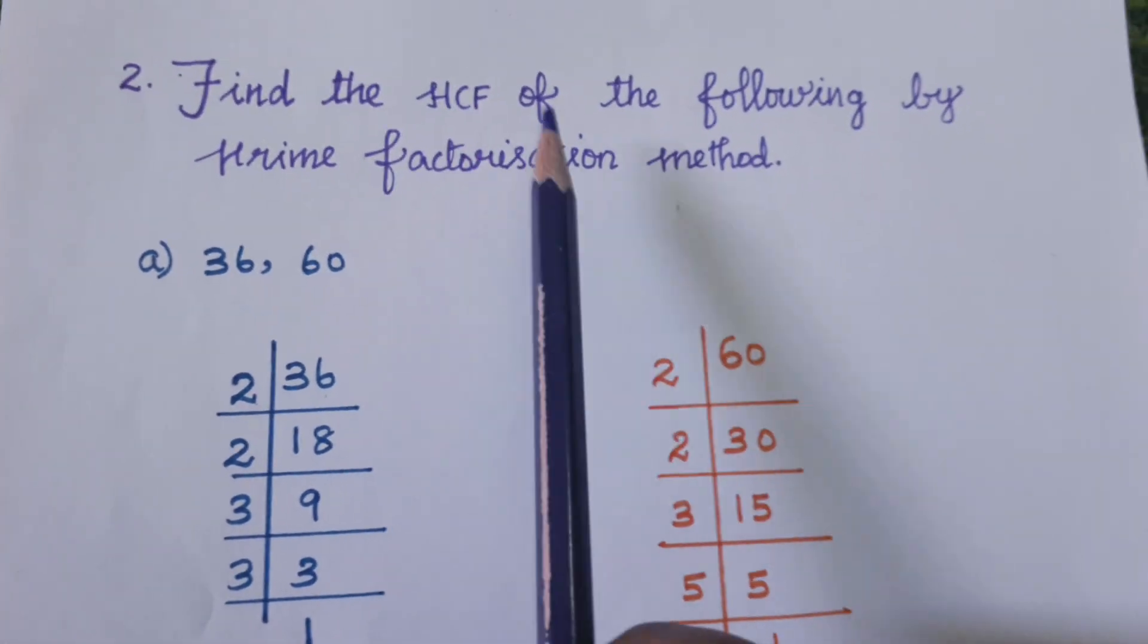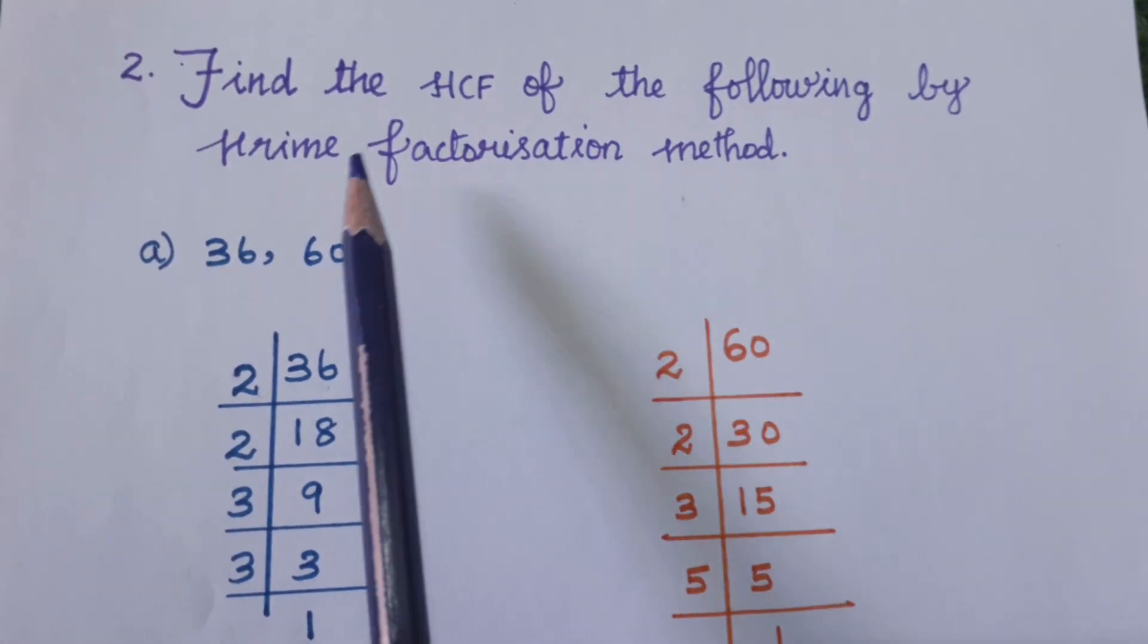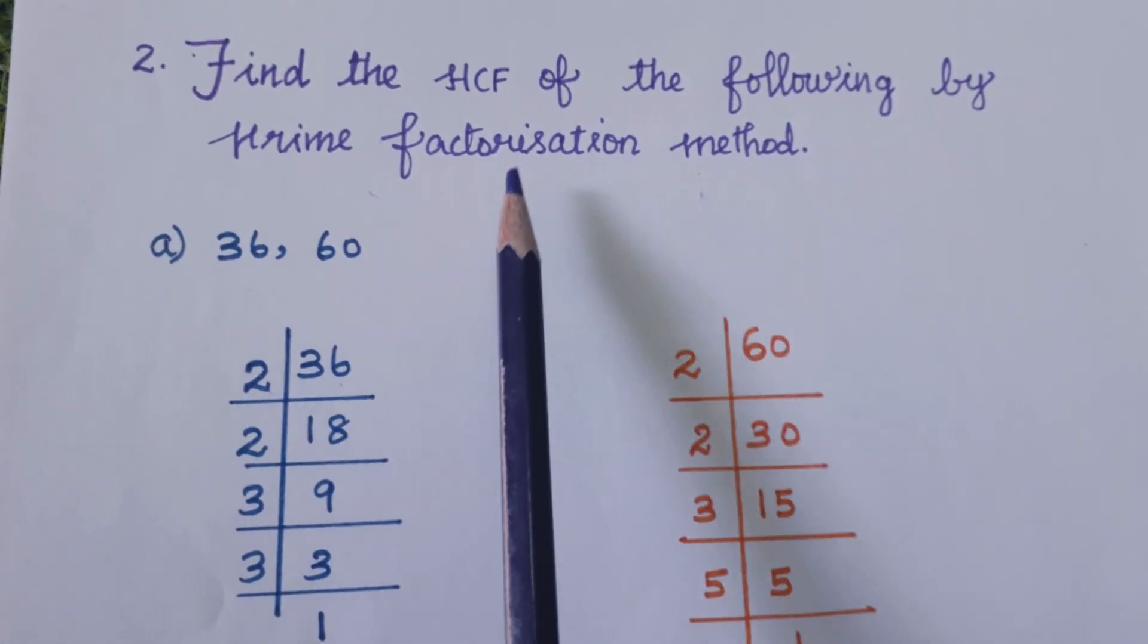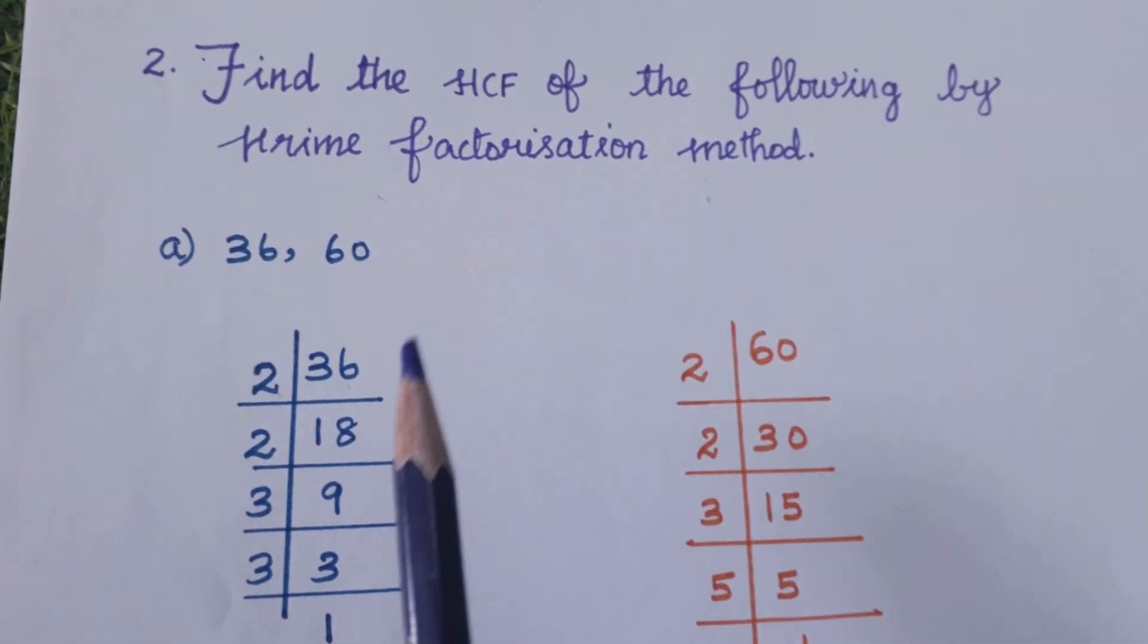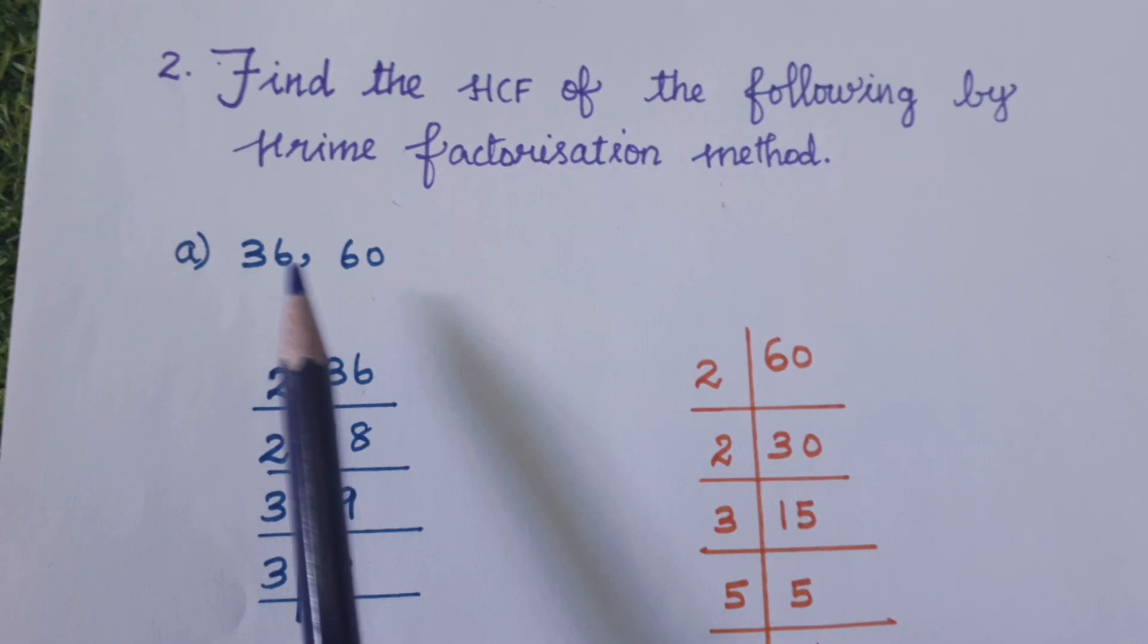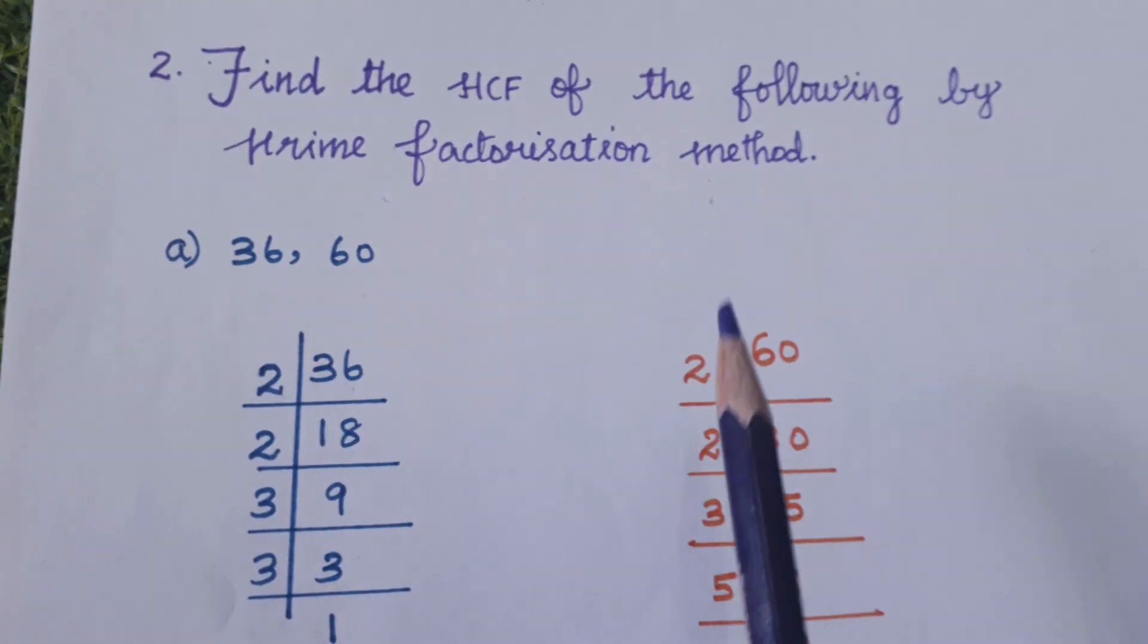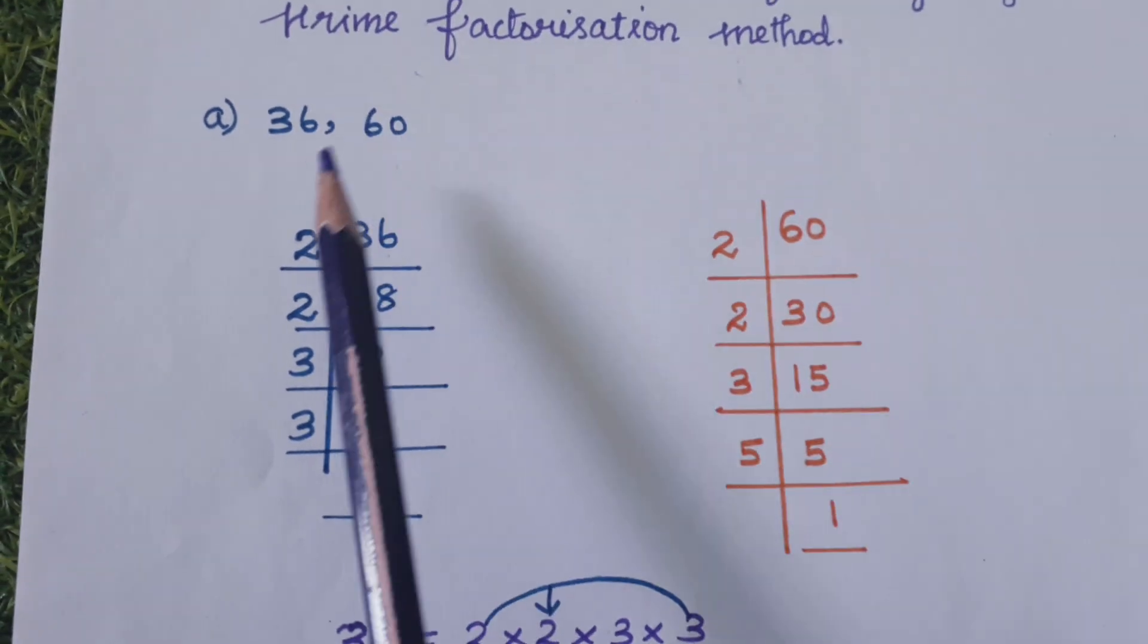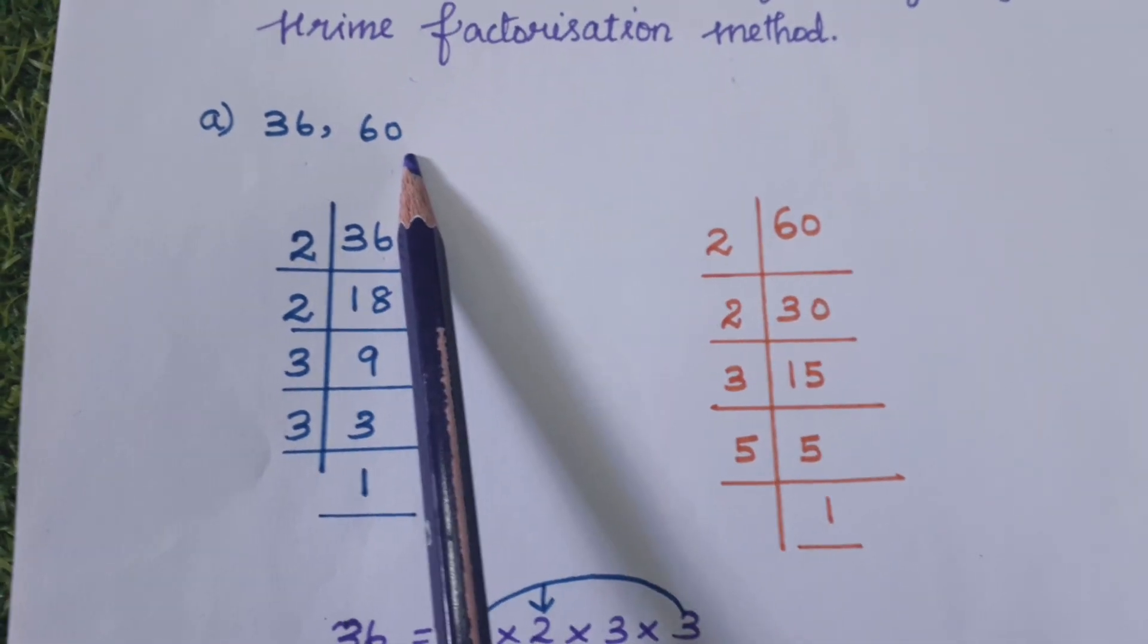Find the HCF of the following by prime factorization method. Prime factorization method means we separate the numbers to get factors. Here, 36 and 60 are the numbers.